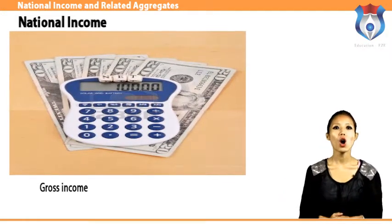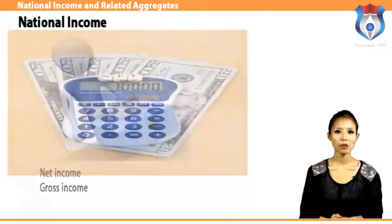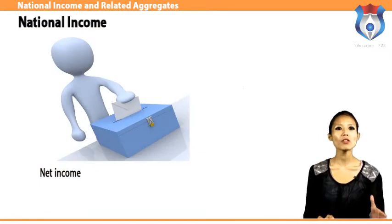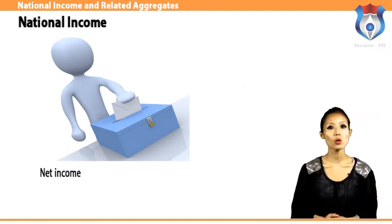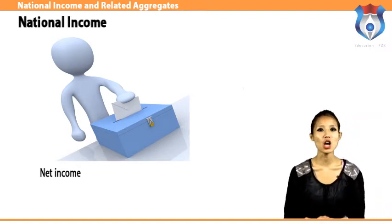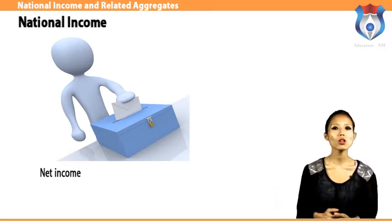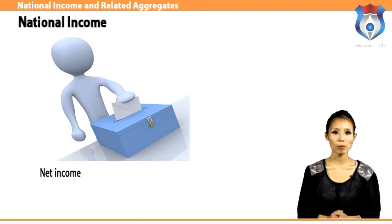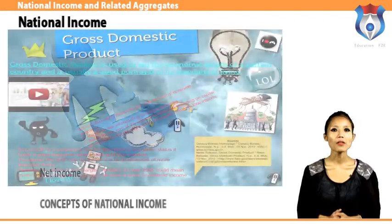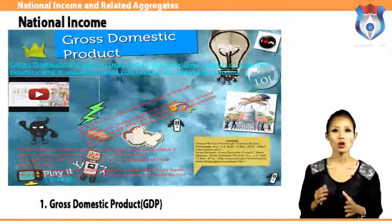Net income is the total revenue in an accounting period minus all expenses during the same period. If income taxes and interest are not deducted, it is called operating profit or loss as the case may be — also called earnings, net earnings, or net profit.